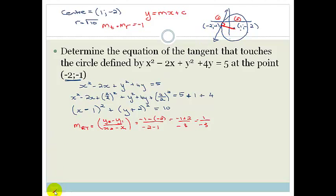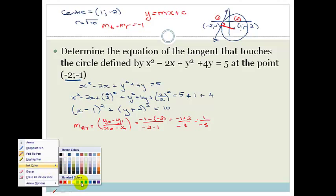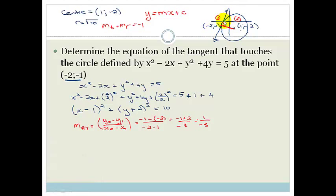Now we want the gradient of the tangent. The gradient of the tangent. But what do we know? We know that if we multiply the gradient of the radius times for the gradient of the tangent, it has to equal minus 1. So therefore, we can say m of the tangent times by negative a third equals negative 1. Therefore, the gradient of the tangent has to be equal to 3.